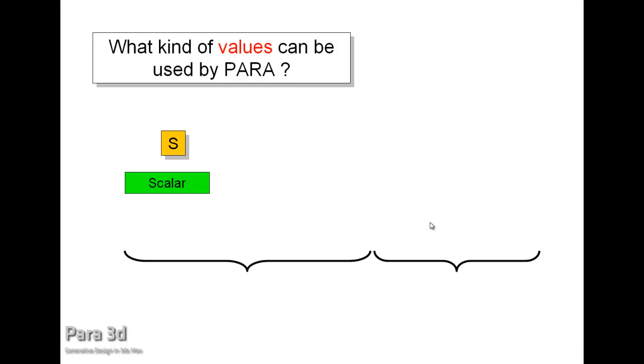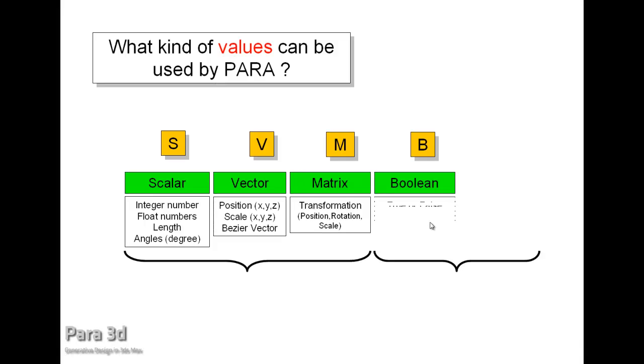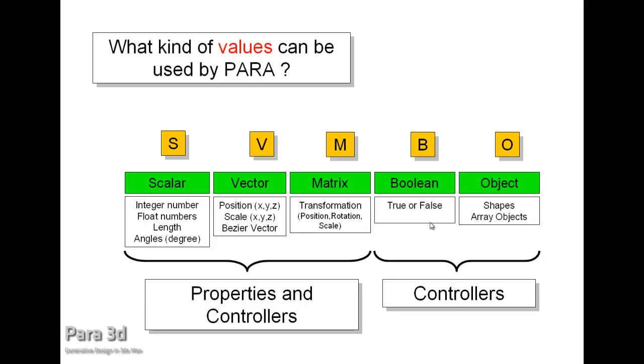Having said that there are different types of values, now we're going to look at a few of them that are being used in Para3D. However, there are more types than what we are presenting here in Maxiscript, but in Para3D we are just dealing with these five types. The first type is a scalar, and it can refer to an integer number or float number or a length or an angle in degrees. A vector type can represent the position or scale.